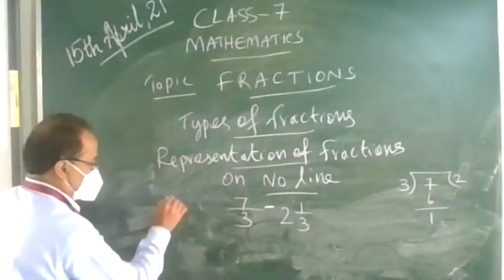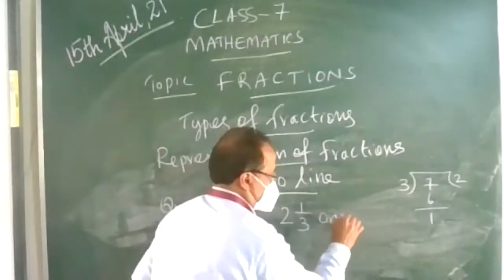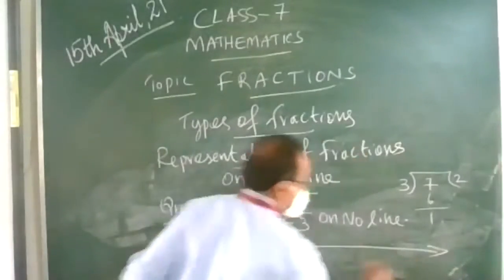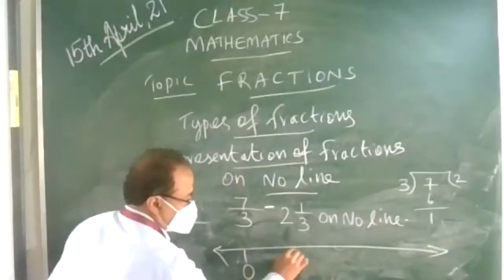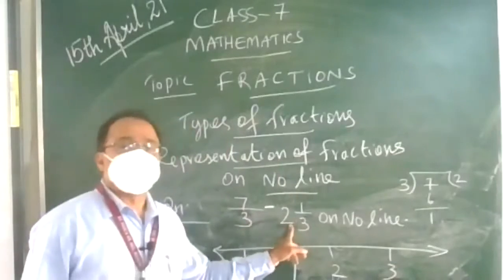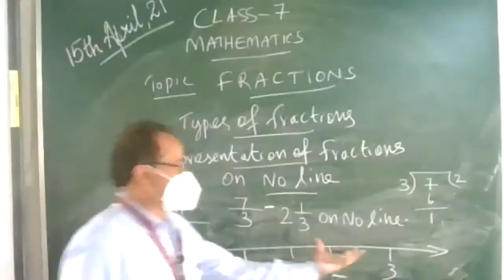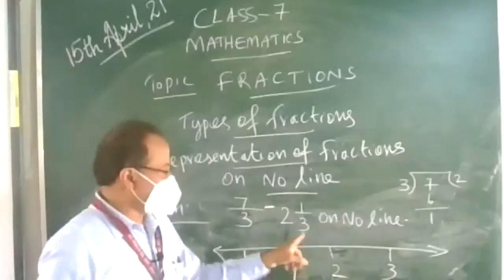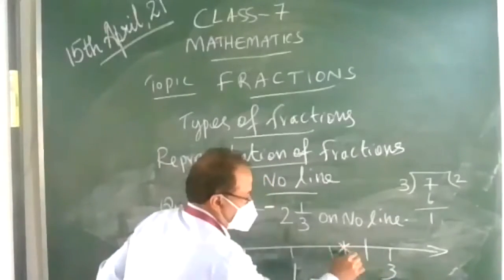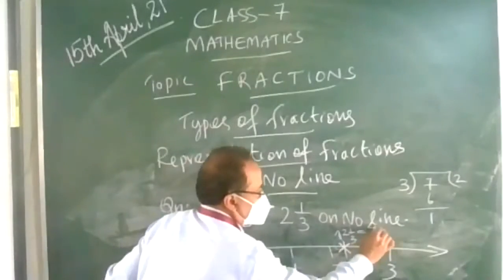Representing 7 upon 3 on the number line: draw 0, 1, 2 on the number line. Since 7 upon 3 equals 2 and 1 upon 3, it lies between 2 and 3. Divide the segment between 2 and 3 into 3 equal parts. The first part after 2 is 2 and 1 upon 3, which is equal to 7 upon 3.